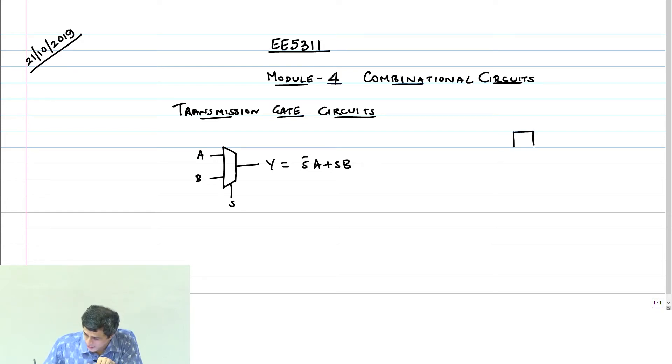So the transmission gate circuit is like this. We obviously do not put only one NMOS or one PMOS because NMOS can only pass a 0, PMOS can only pass a 1. So to pass both logic levels, you put them in parallel. Whichever is least resistance will pass it easily.